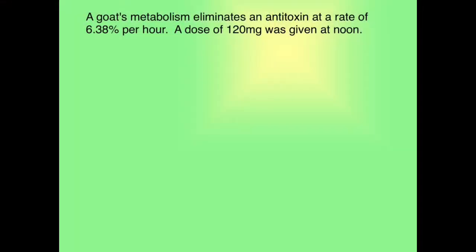A goat's metabolism eliminates an antitoxin at a rate of 6.38% per hour. A dose of 120 mg was given at noon. First question, how much antitoxin remains in the goat's system at midnight?